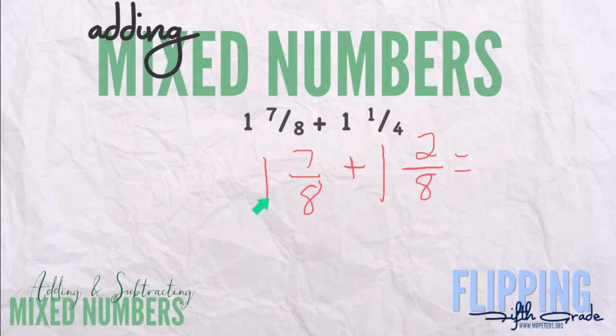The first thing we want to do is we want to add our whole numbers. When we do that, we get two. And we can transfer over our eight. Now, we can add our numerators. Seven plus two is nine.